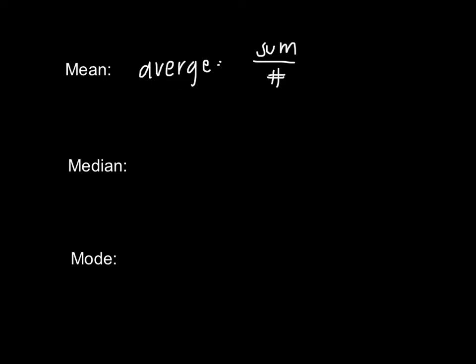The median is our middle number. So typically we would line up our numbers in order from least to greatest, cross out beginning from the ends, and finally we are left with some number in the middle. This is our median.